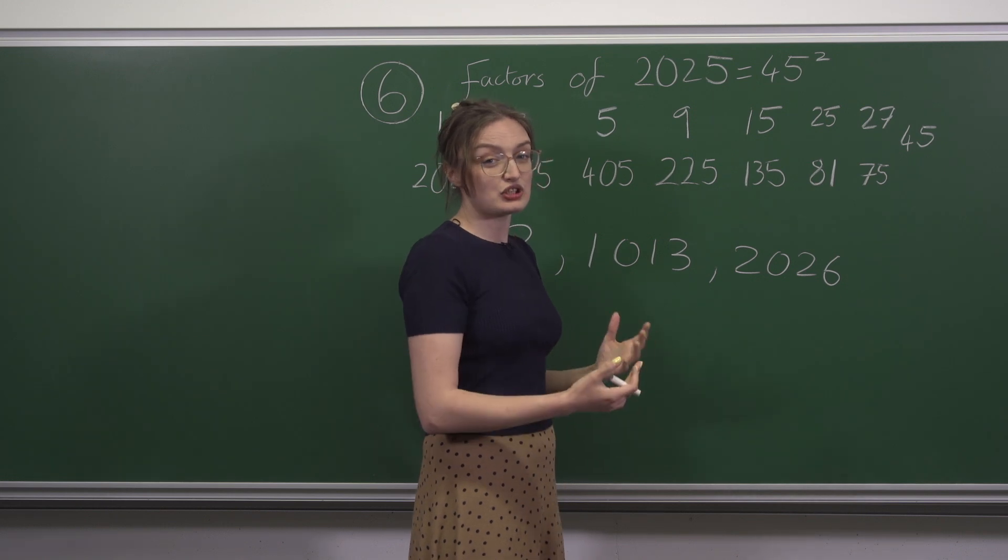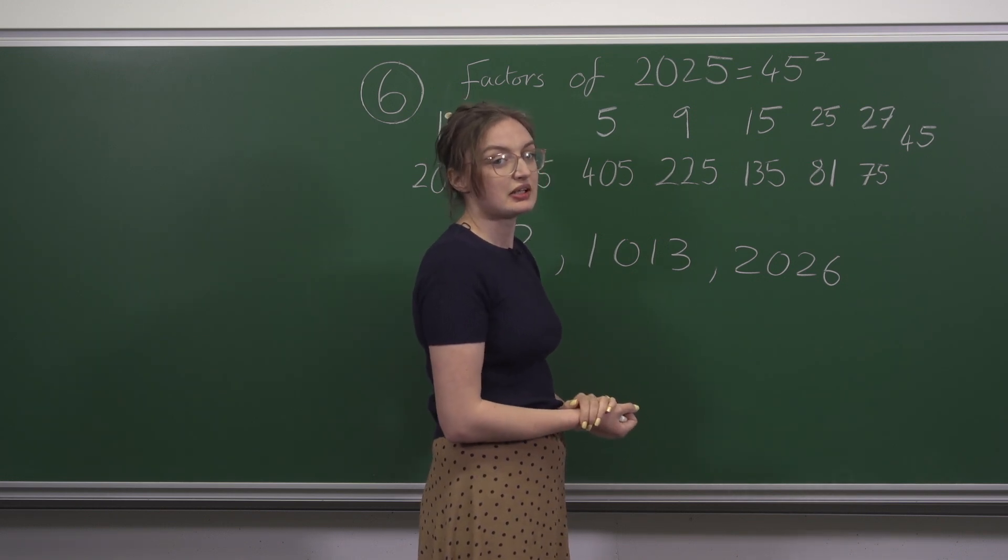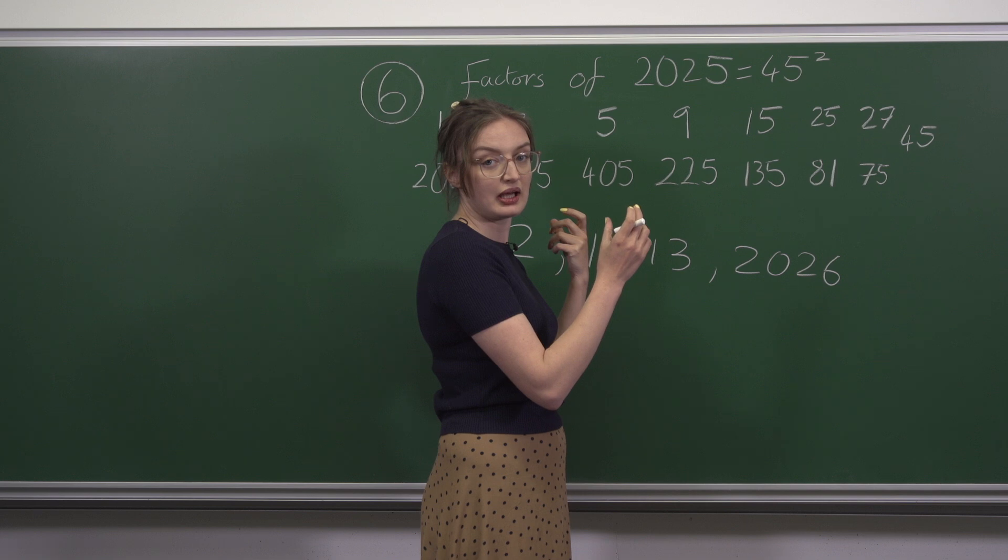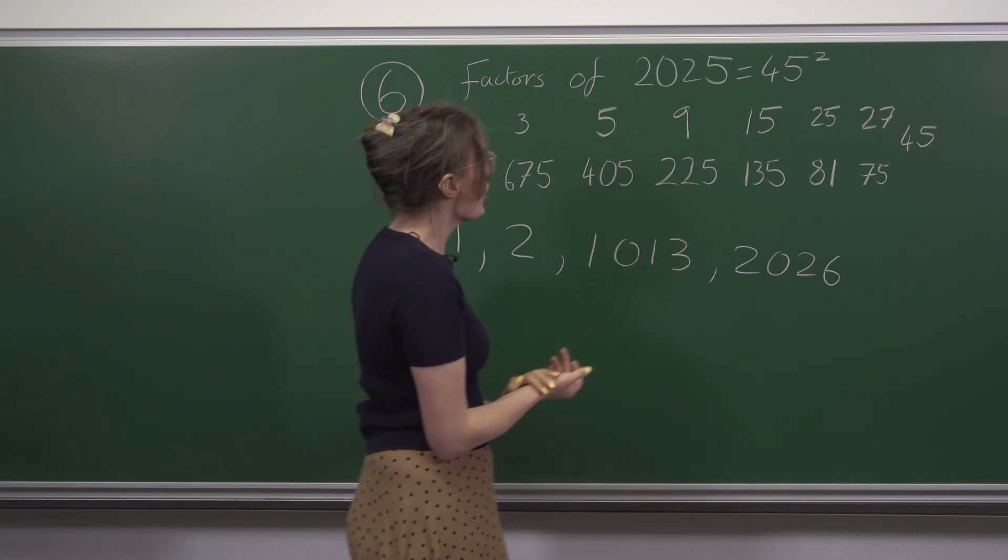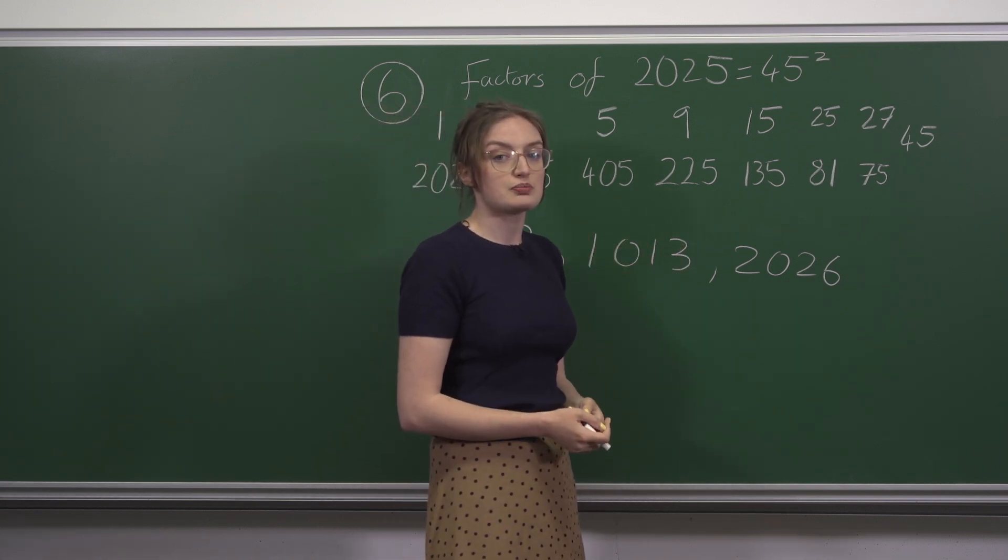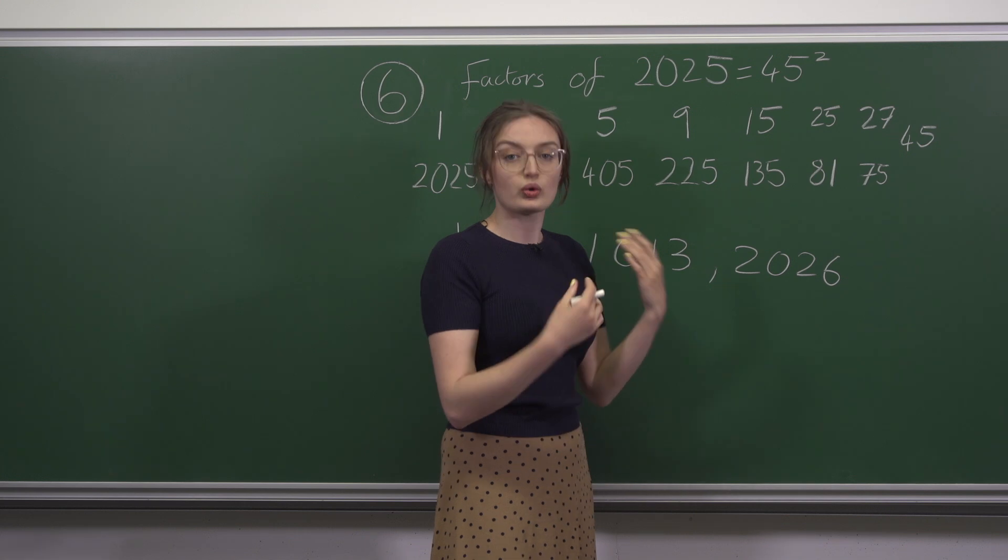Since any even number squared is an odd square times by a power of 2, we can just say that we want the number to be a square or 2 times a square.